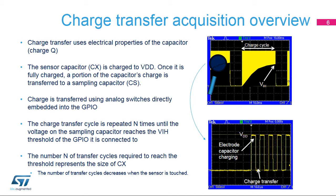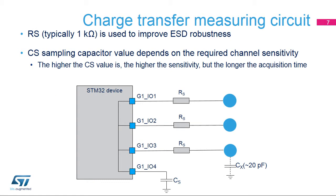The charge-transfer acquisition technique works using the electrical properties of the capacitor. It consists of charging the sensor capacitor, CX, to VDD. Once fully charged, a part of the accumulated charge is transferred into a sampling capacitor, CS. The number of charges transferred depends on the factor CX divided by CS. The charge-transfer cycle is repeated N times until the voltage on the sampling capacitor reaches a threshold, VIH. The number N represents the size of CX. When there is a touch, the sensor capacitor increases, so more charge is transferred, leading to a decrease in the number of charge-transfer cycles. The charge-transfer is performed through analog switches embedded in the GPIO.